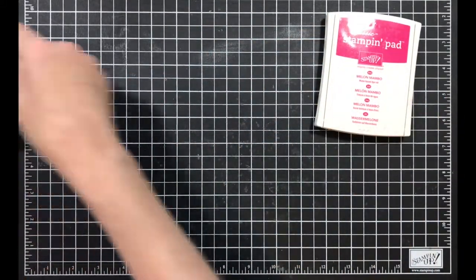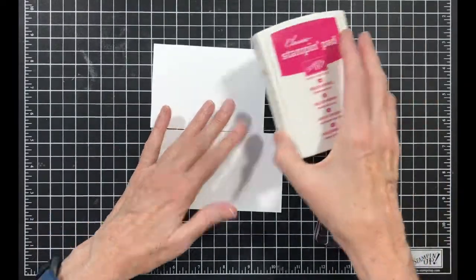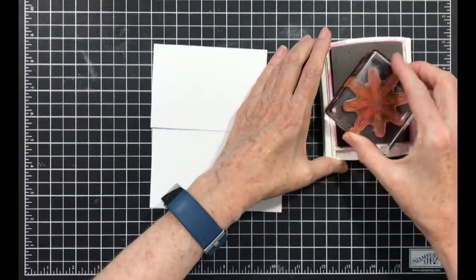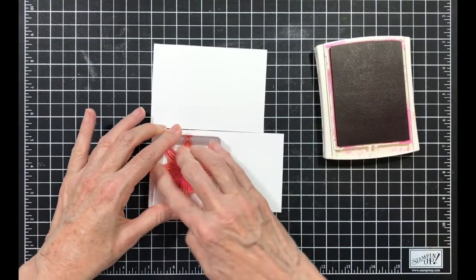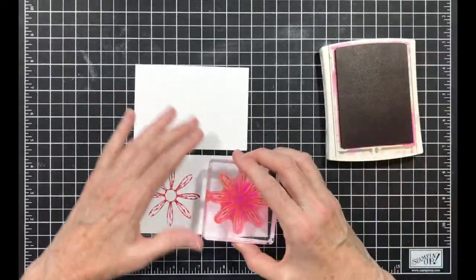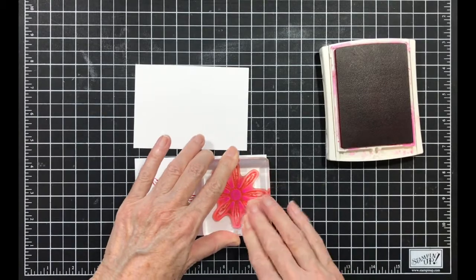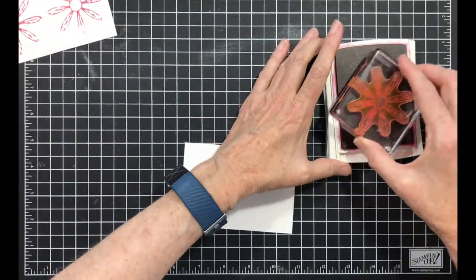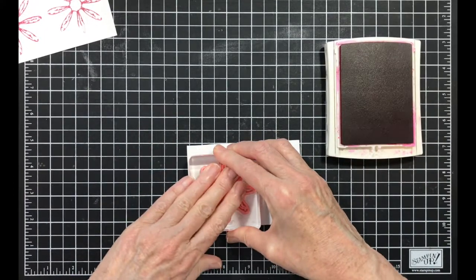So the first thing I want to do is I want to get my flower stamped. I decided to use Melon Mambo because I hadn't used Melon Mambo in a while. I am going to make sure I have one section. I have one petal that doesn't want to stamp for some reason, so I am making sure I hit the petals. Of course that may have been me not inked up right.